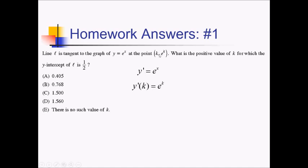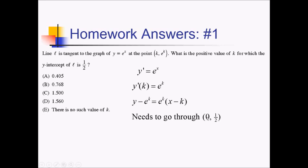So that's our slope at this point of tangency. Using point-slope to plug all this in, we've got y minus e to the k equals e to the k times x minus k. To solve for k, we need to plug in something for x and y. Since we have a y-intercept of one-half, that means we go through the point (0, 1/2), so I plug zero in for x and one-half for y. So I rewrite this as one-half minus e to the k equals e to the k times zero minus k, and I'll solve this on the grapher.